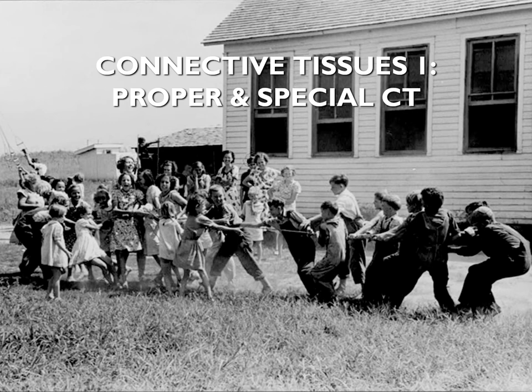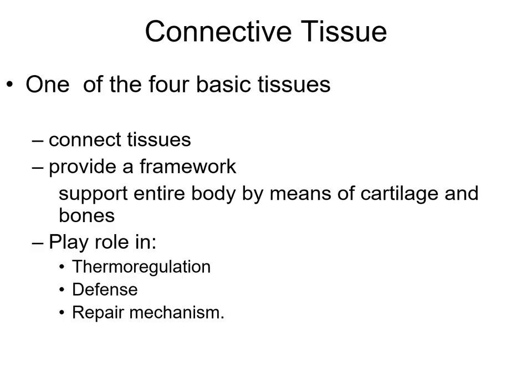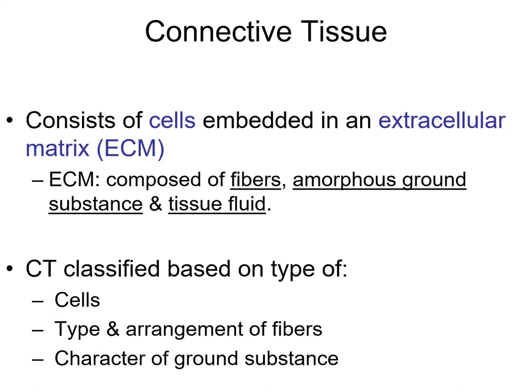Today I'm going to start to talk about the connective tissue. In our body we have four main basic tissues: the epithelium, the connective, the muscle, and the nervous system. The connective tissue is one of the four basic tissues. From the name, it connects the different tissues together, provides a framework to support the entire body by means of cartilage and bones. The skeletal system consists of bones and cartilage, which support the entire body and enable us to move and act. Connective tissue also supports and protects the soft tissue, plays a role in thermal regulation, and in defense and repair mechanisms.